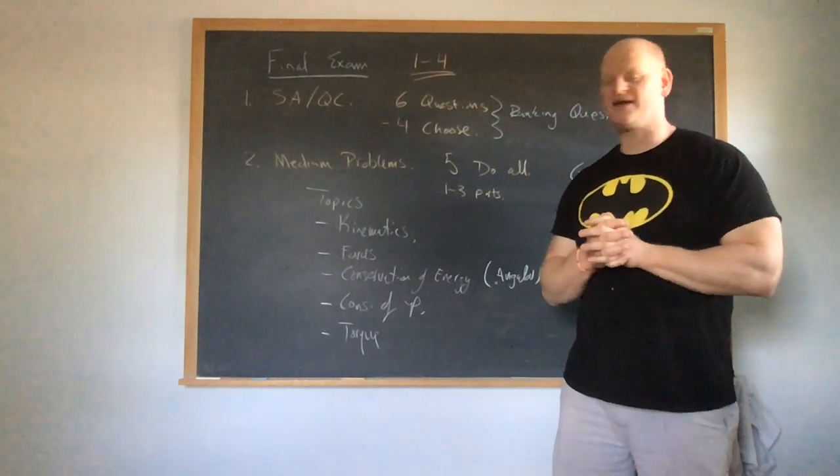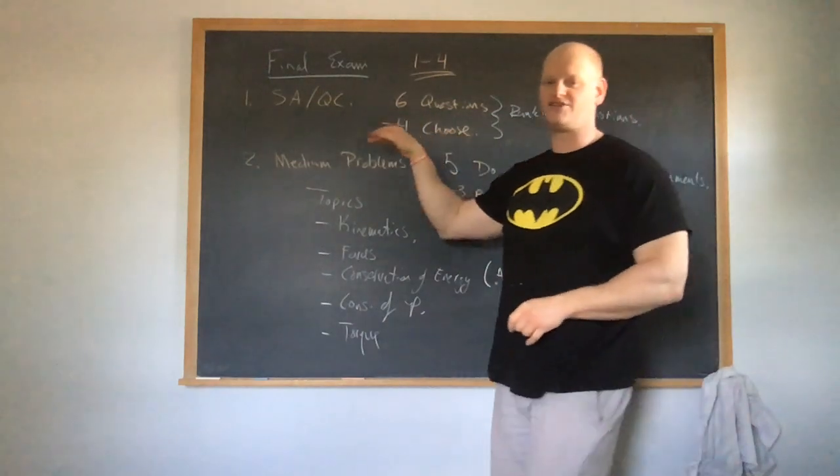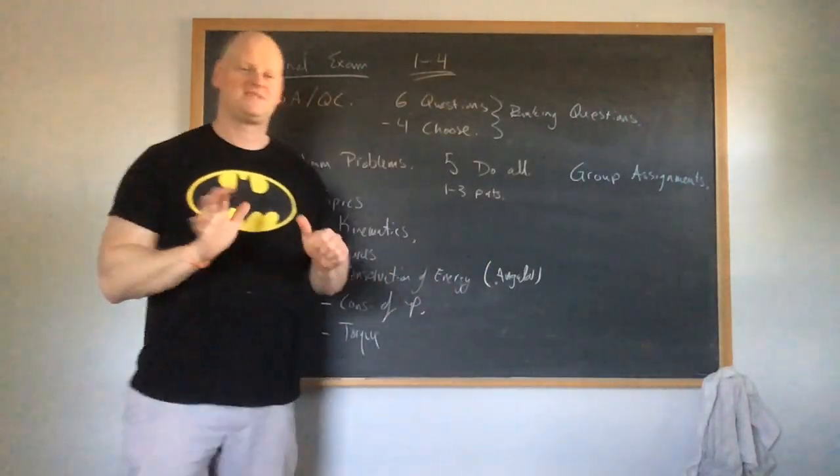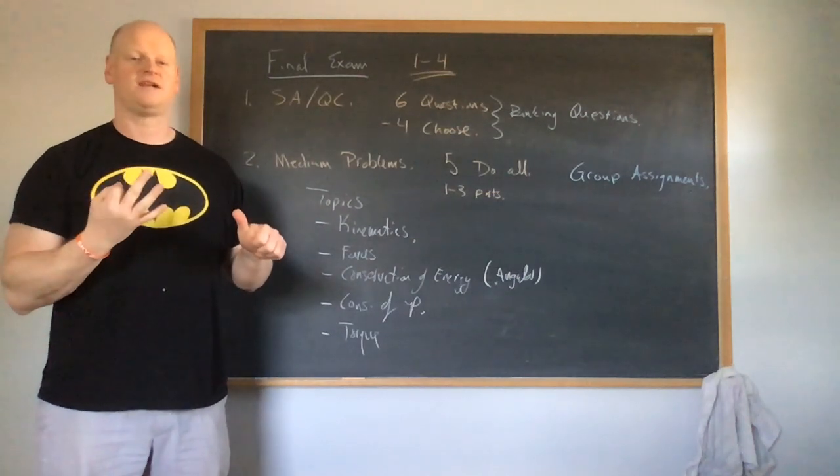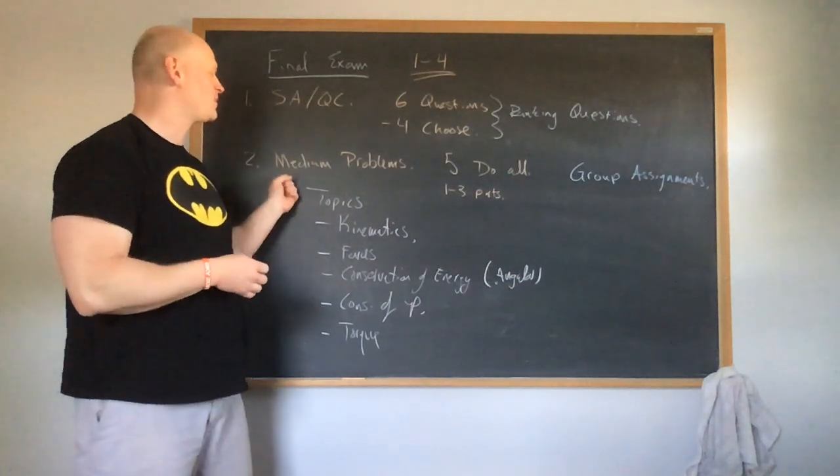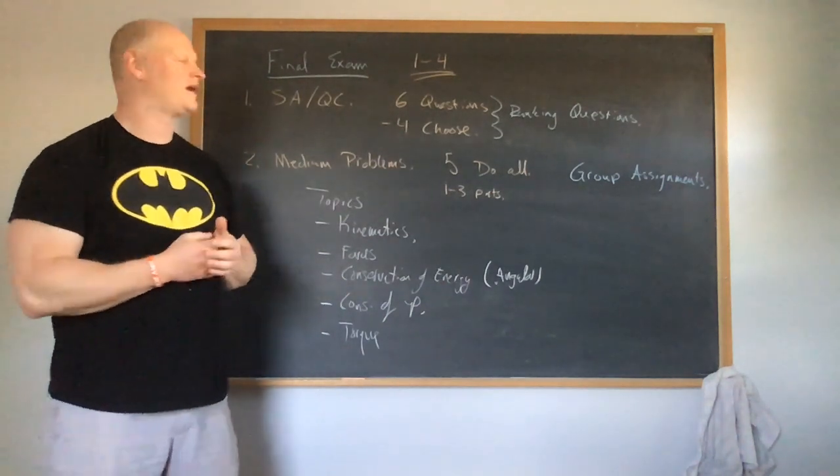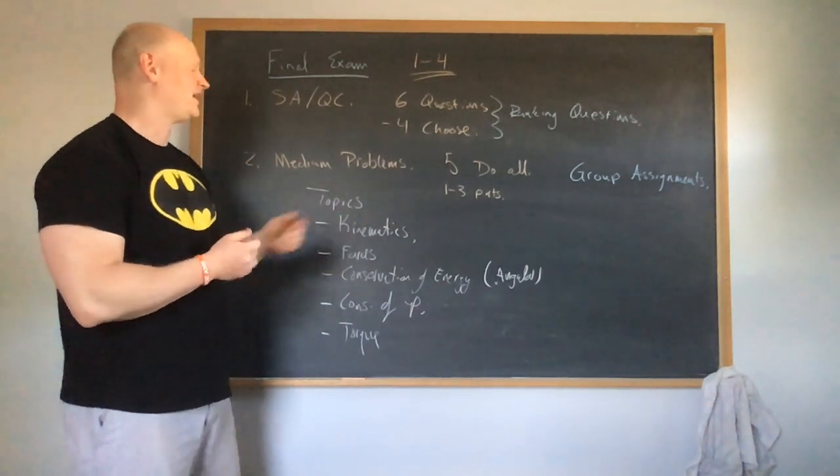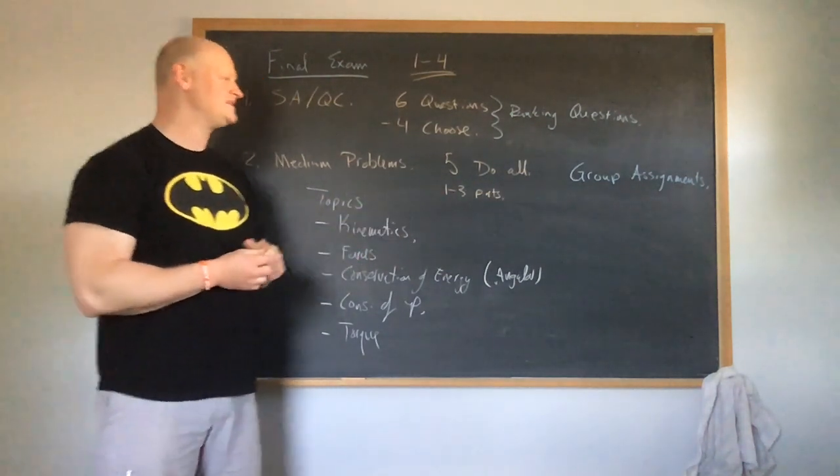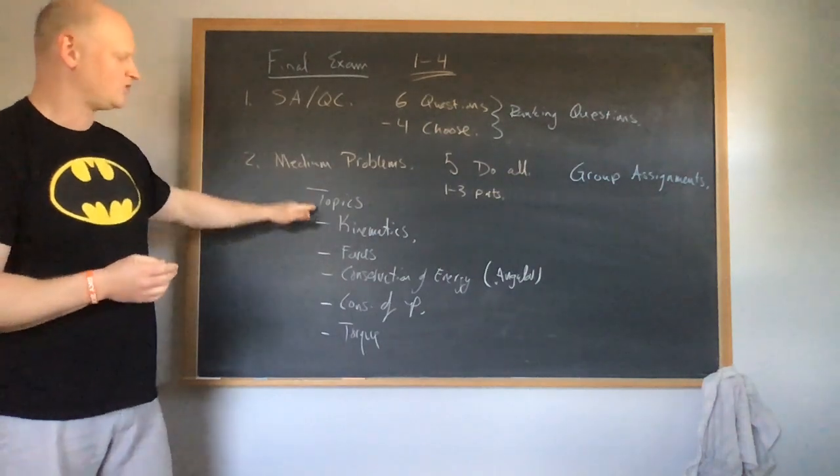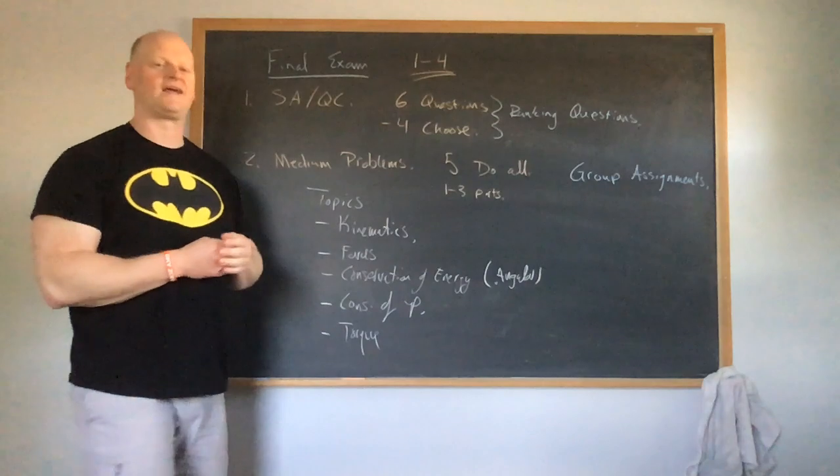Anyways so that's about it. So again same structure as before, short answer calculation, now you have twice as much. So again six choices, choose four of them. This part then you now have five instead of six like it should be on there but that's fine. And again these are one to three parts, so again A or A and B at most A, B, C. And again it's going to cover all of these particular topics and again short answer most of them are going to be ranking questions.